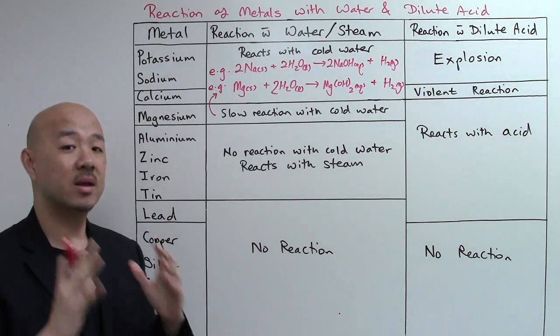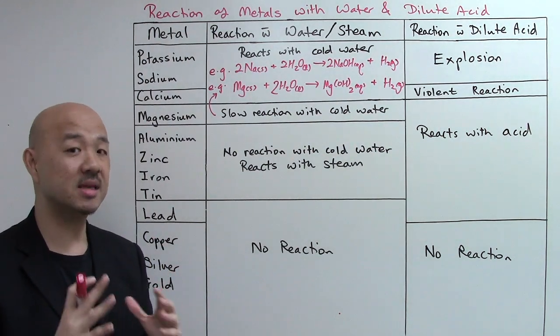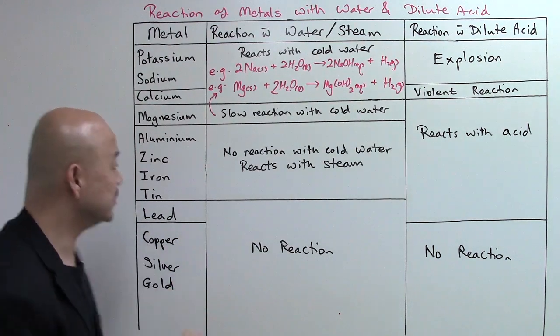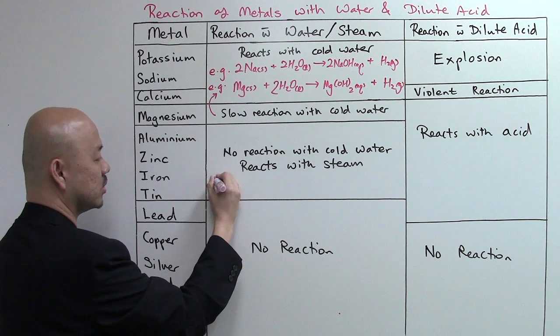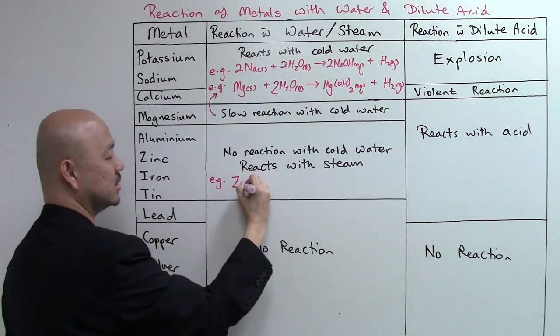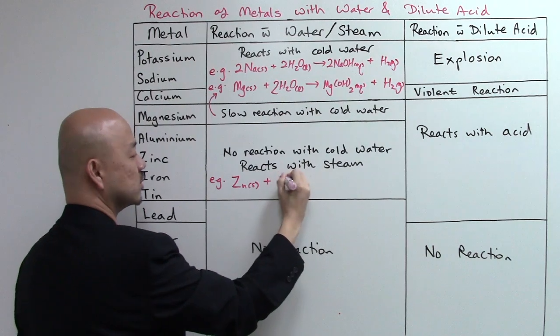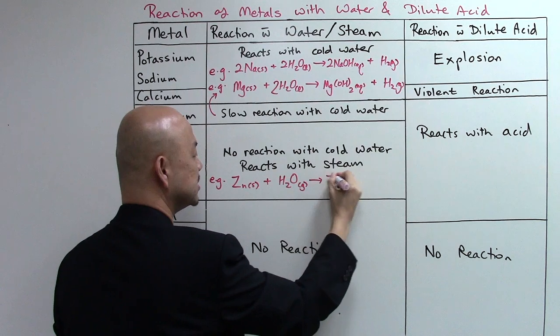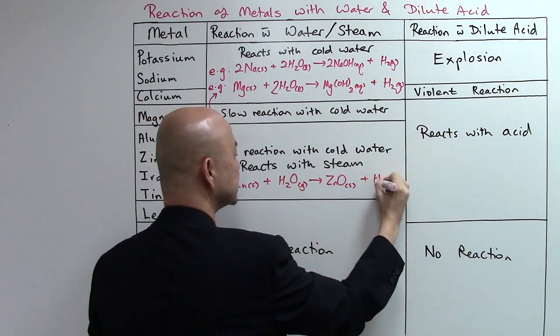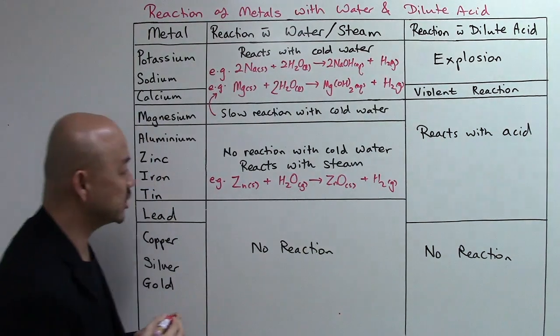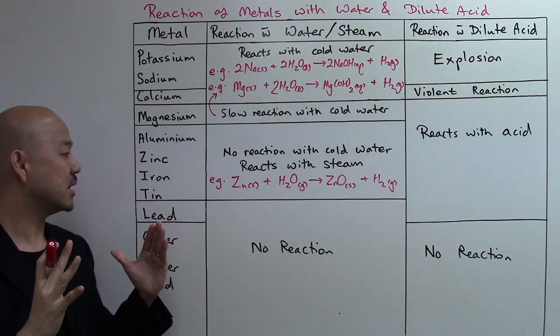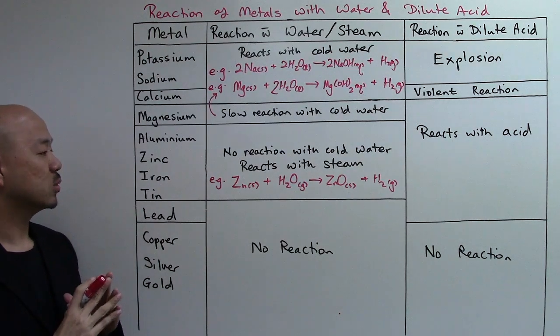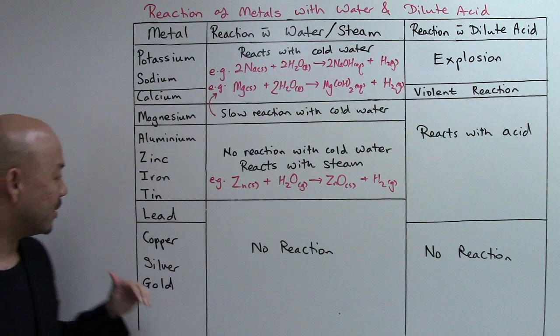Let me give you an example. Perhaps you can use zinc. Zinc reacts with H2O in gaseous state, so this is your steam, and they form zinc oxide and hydrogen gas. I believe this equation is balanced. This is how you show the reaction of zinc with steam.